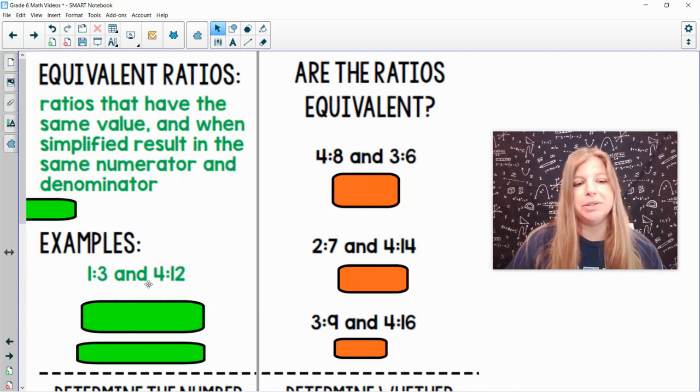These would be equivalent ratios. And when I think about it, if I took 1 third and I multiplied the numerator and denominator, or 1 and 3, by 4, 1 times 4 is 4, 3 times 4 is 12.